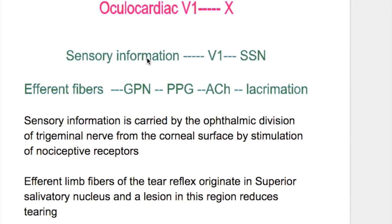The sensory information of the tearing reflex starts from the ophthalmic division to the superior salivatory nucleus, and from there efferent fibers through the greater petrosal nerve relay in the pterygopalatine ganglion and secrete acetylcholine to cause lacrimation.